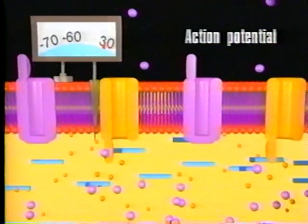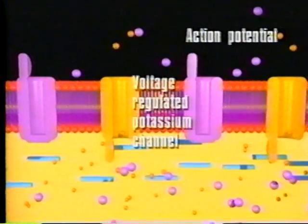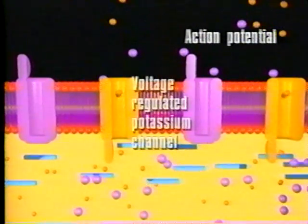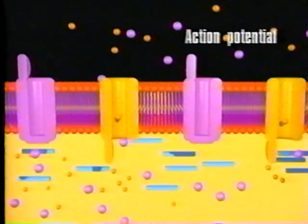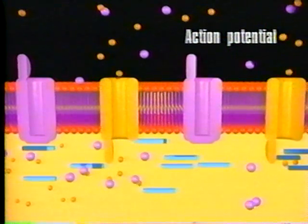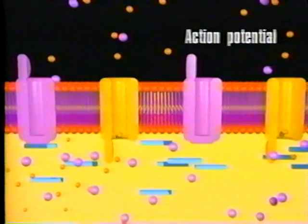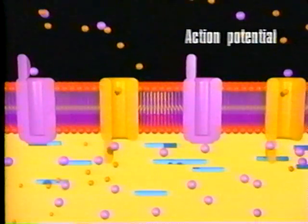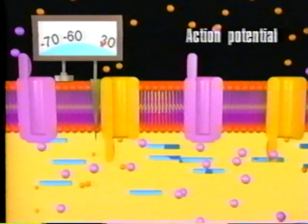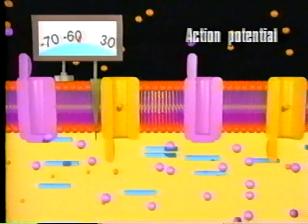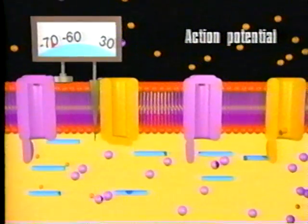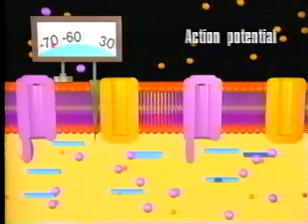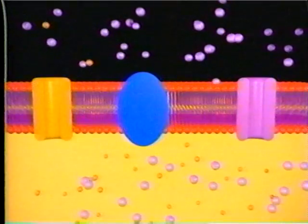At this voltage, the sodium gates close and voltage-regulated potassium gates open. Potassium ions flow out following the concentration gradient, and they are repelled by the excess of positive charges inside the membrane. As potassium ions exit, the membrane gradually returns to its original voltage level. This repolarization helps restore the normal membrane potential, but the interior of the cell still contains an abnormally high number of sodium ions.